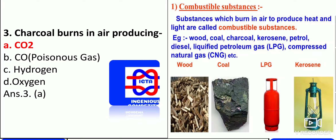Combustible substances are those which burn in air. They burn in air to produce heat as well as light. Examples of combustible substances include wood, coal, charcoal, kerosene, petrol, diesel, LPG, and compressed natural gas (CNG). These are all combustible materials used for various purposes.